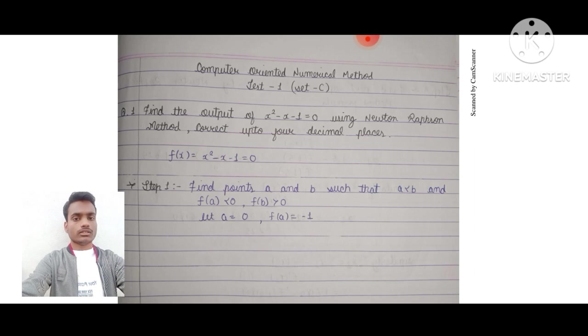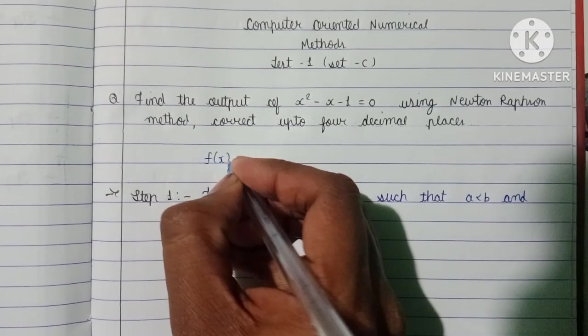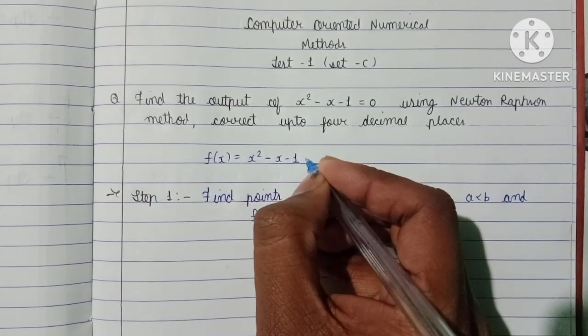We start the solution by writing f(x) = x² - x - 1 = 0.